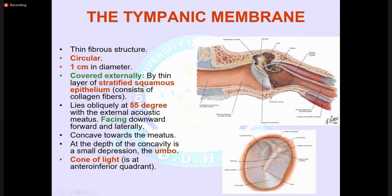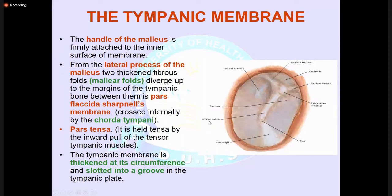The concavity of the tympanic membrane shows a small depression called the umbo, and there is the cone of light — these are the normal landmarks of the tympanic membrane. The handle of the malleus is firmly attached to the inner surface. The lateral process of the malleus and the two bands of the malleus folds diverge to form the pars flaccida, known as Shrapnell's membrane, while the pars tensa is held taut by the inward pull of the tensor tympani muscle. The tympanic membrane is thickened at its circumference and slotted into a groove in the tympanic plate.